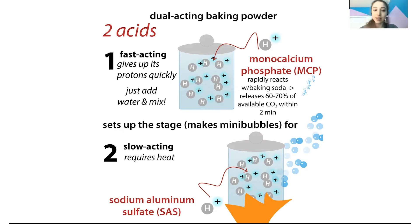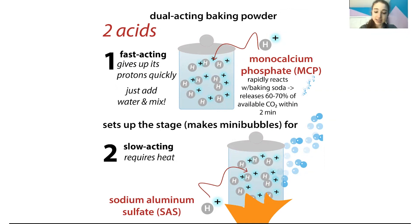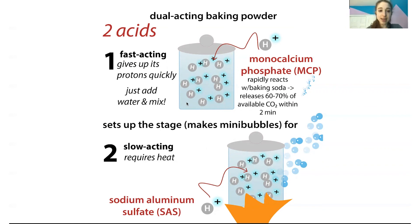The fast-acting component creates many mini bubbles throughout your dough. Then when you add heat, the slow-acting component — often sodium aluminum sulfate (SAS) — activates and takes advantage of all those tiny bubbles. The fast-acting component did the hard work making the initial bubbles, and then the slow-acting component expands those existing bubbles, which are nicely distributed throughout. This gives you a nice, consistently fluffy texture throughout your dough or batter. Having these two components helps control consistency.